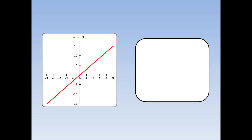And this makes sense if we look at the graph of y equals 3x. If we differentiate y equals 3x, it just becomes dy by dx is 3. That just means the gradient is 3 everywhere on the line, and it doesn't matter what x is, which is what you'd expect for the graph of y equals 3x.